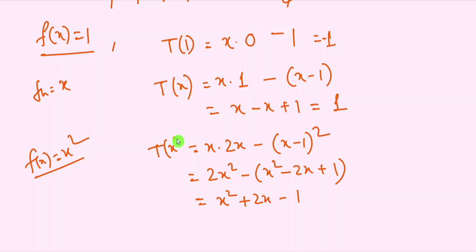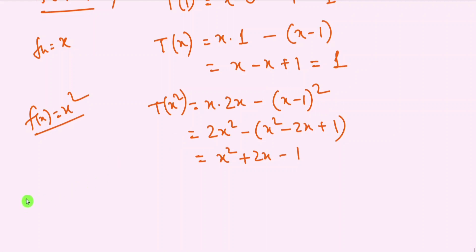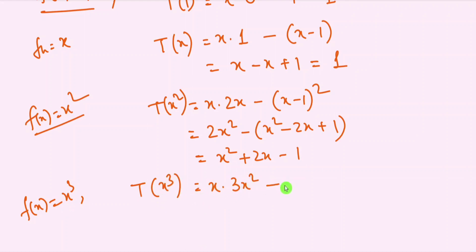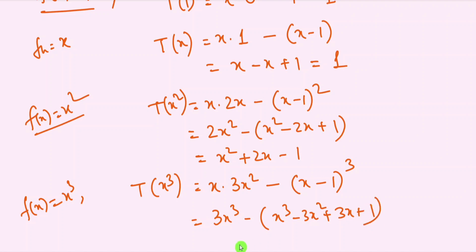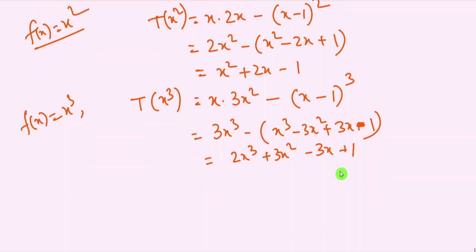For f(x) = x³, T(x³) = x·3x² minus (x−1)³, which equals 3x³ minus (x³ − 3x² + 3x − 1), equal to 2x³ plus 3x² minus 3x plus 1.